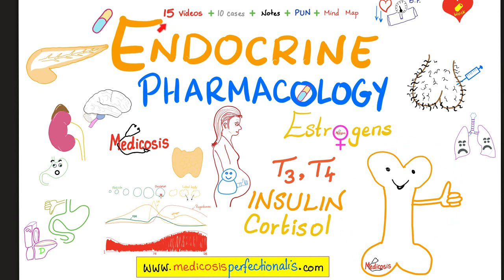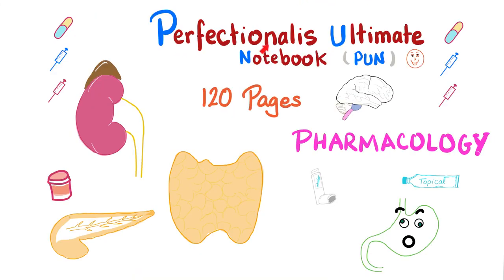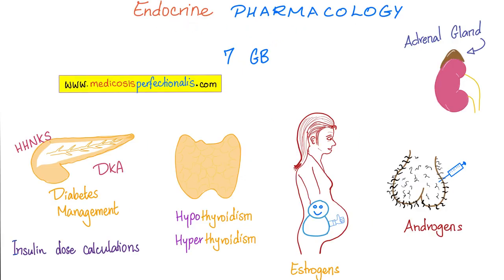This course has 15 videos, 10 cases, notes, the Perfectionitis Ultimate Notebook, and a mind map. Here's the Perfectionitis Ultimate Notebook — 120 pages of pure endocrine pharmacology content. It is robust, it is clean, and I strongly recommend that you print this file after you download it. This course has about 7 gigabytes of content.